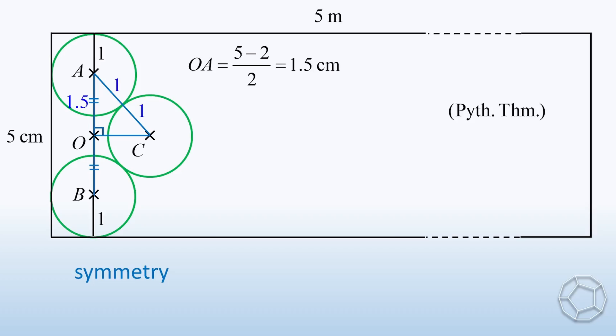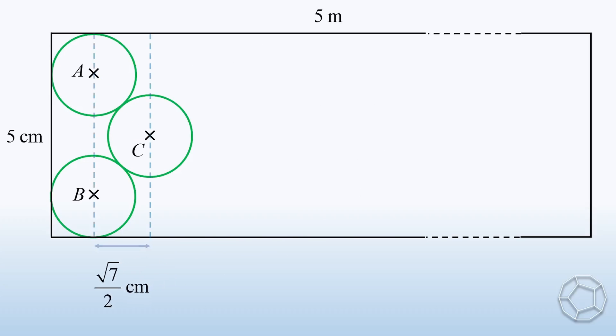Here, we have AC equals to 2 cm. Therefore, 1.5 square plus OC square is equal to 2 square. Solving it and using fraction, we get OC is equal to square root of 7 over 2 cm. This value is so important because it is exactly the separation of the circles.